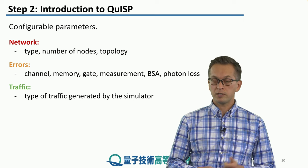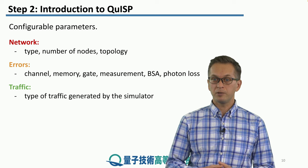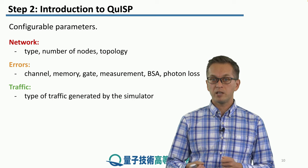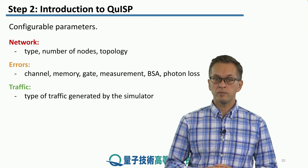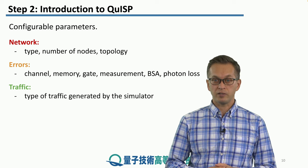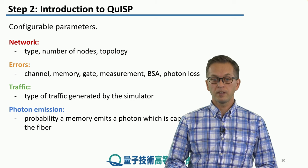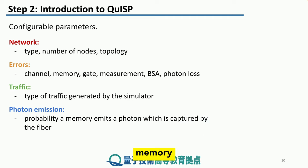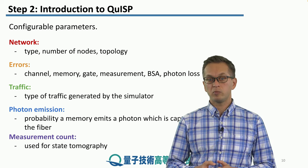We are also able to configure the traffic. Normally, in a quantum network, you don't just have two nodes talking to each other trying to obtain qubits so that they can perform teleportation. You have a large number of nodes sending messages and sending requests. Some nodes will be more busy, some nodes will be less busy. We can also configure photon emission — what is the probability that the memory emits a photon and this photon is successfully captured into the fiber — and what is the measurement count for a state tomography process.